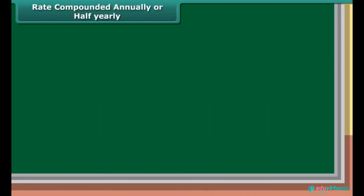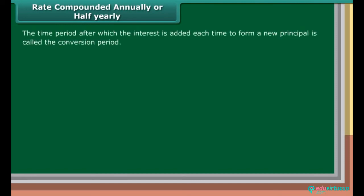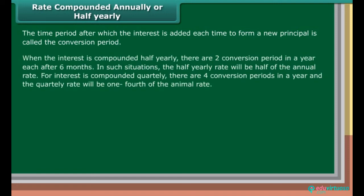Rate compounded annually or half yearly: The time period after which the interest is added each time to form a new principal is called the conversion period. When the interest is compounded half yearly, there are 2 conversion periods in a year, each after 6 months. In such situations, the half yearly rate will be half of the annual rate. For interest compounded quarterly, there are 4 conversion periods in a year and the quarterly rate will be one fourth of the annual rate.